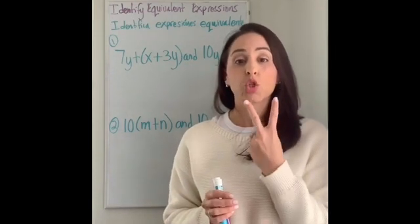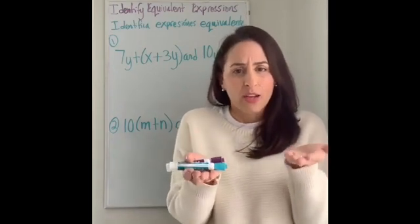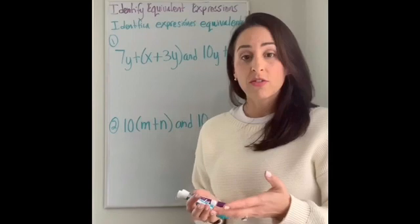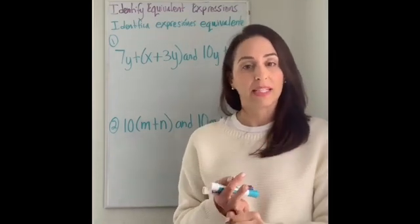They're going to give you two expressions and you have to say, are they equal or not? Okay. So how are we going to do this? The way we do it is we have to use a distributive property. We have to combine like terms.